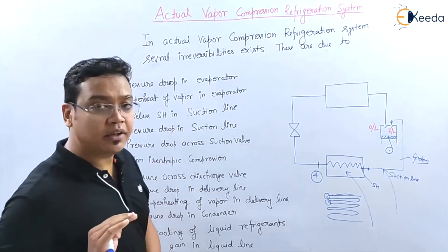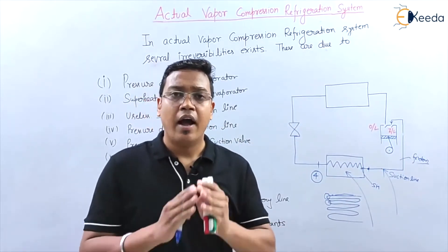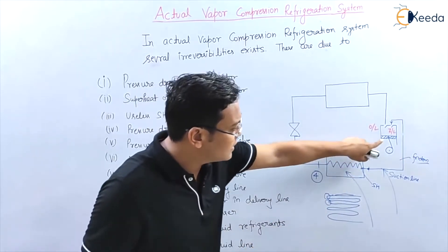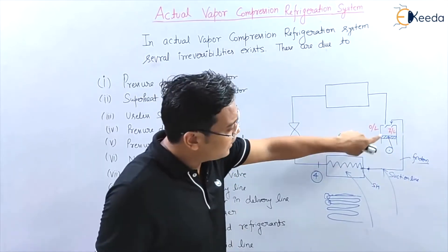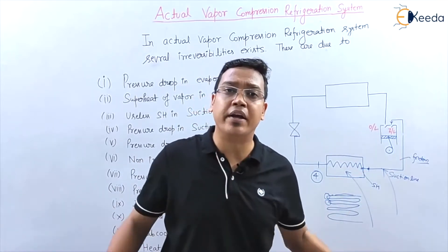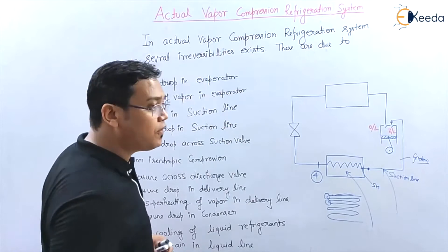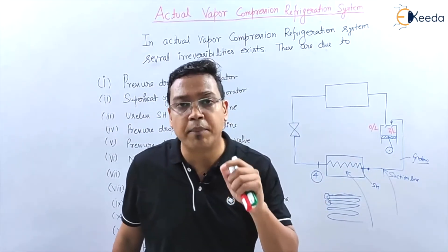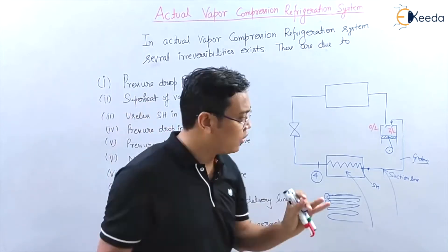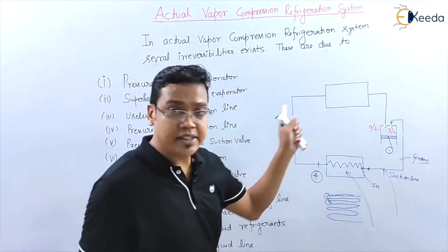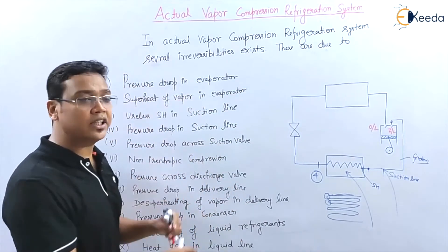The next irreversibility is non-isentropic compression. In an ideal cycle, compression takes place isentropically, but because of internal irreversibilities in the reciprocating compressor, the actual compression process does not follow an isentropic or adiabatic process. After understanding all these points, I will draw the T-S and P-H diagrams for the actual vapor compression refrigeration system.